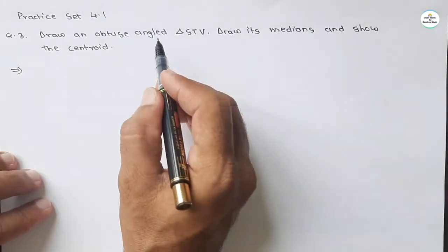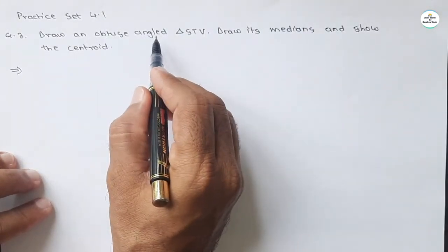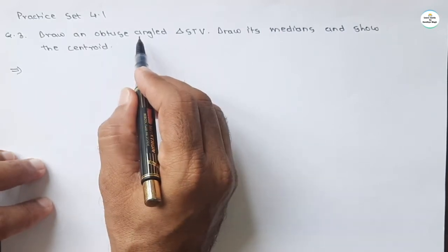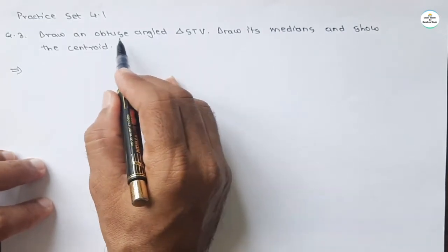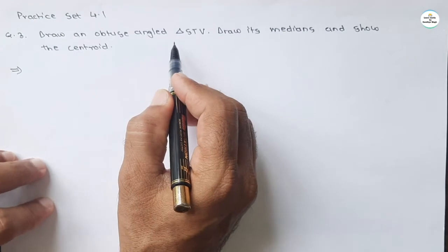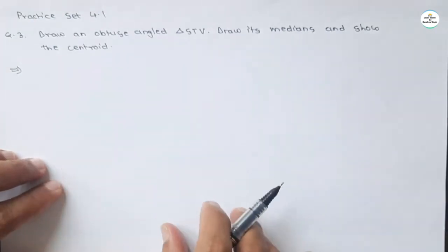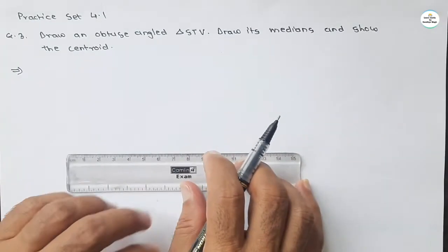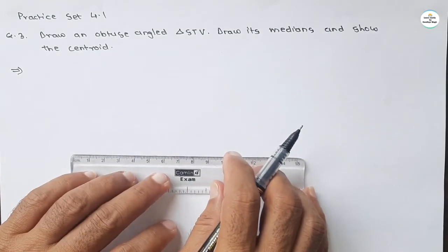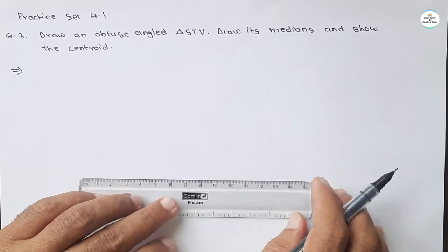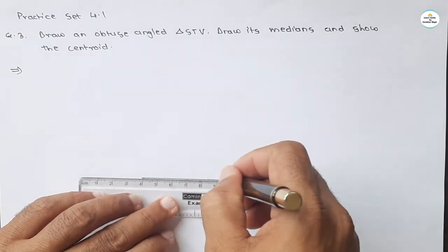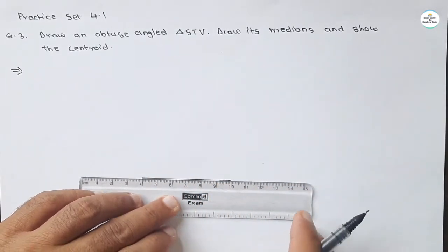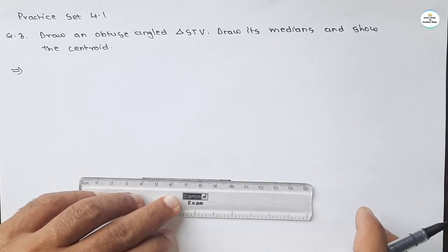We will start our solution by constructing an obtuse angle triangle. An obtuse angle triangle is a triangle whose one angle is more than 90 degrees. So just draw a base of this triangle — let it be 6 centimeters — and one angle must be more than 90 degrees.